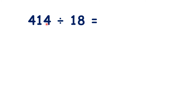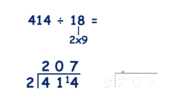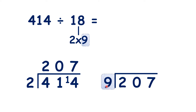So here we have 414 divided by 18. You might not know your division facts for the 18 times table, but I'm sure you do know that 2 times 9 is 18. So now pause the video and see if you can use this to answer the question. We can start with 414 divided by 2, our first factor. That gives us 207. Then we can divide 207 by 9, our second factor. And that gives us our answer, 23.